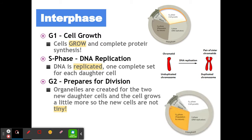Lastly, we have G2, where we prepare for division. We create new organelles and grow a bit more so the new cells aren't tiny when we split the one cell in half. So interphase prepares us to divide the cell while also carrying out normal cell functions like growth and development.